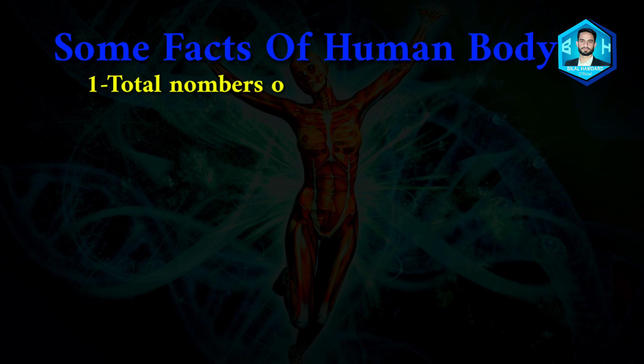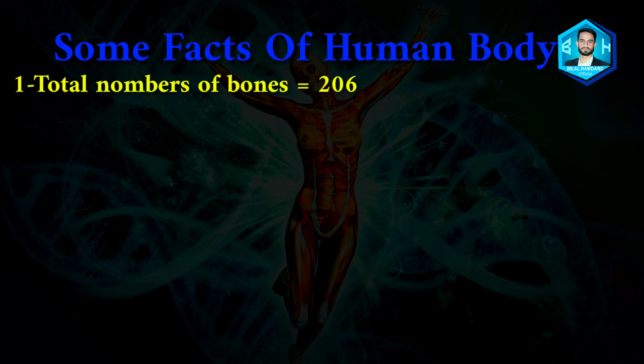Number one: the total number of bones is 206. In the human body, the total number of bones is 206.